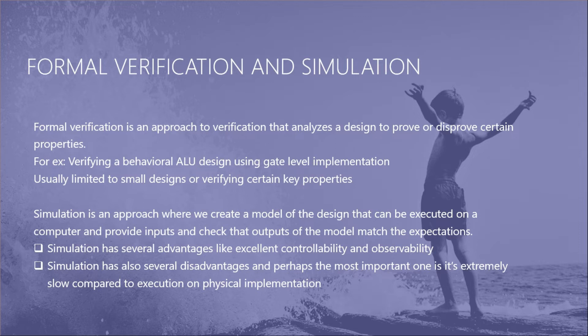Simulation also has several disadvantages. The most important is that it is extremely slow compared to execution on a physical implementation. One reason is that simulation sequentializes a parallel design. If there are millions of gates in the design, in an IC all gates operate in parallel, but in simulation each gate must be analyzed sequentially. For example, if a microprocessor executes 100 million instructions per second, a simulation of its gate-level model may execute only 10 instructions per second — making it 10 million times slower.